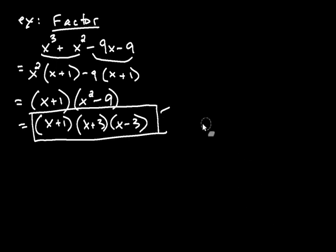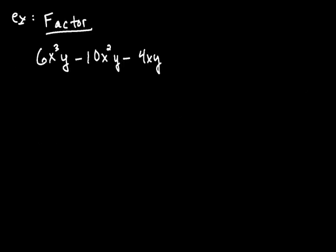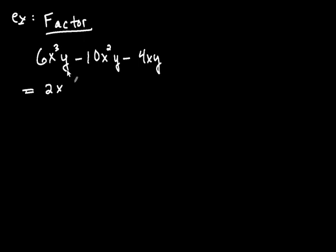Let's try another one — factoring another polynomial. This one has three terms: one, two, three. So this is a trinomial. When you see trinomials, factoring by grouping is usually not the strategy you want. I start by asking: do the three terms have anything in common? Six, ten, and four have a factor of two in common. The terms also have an x in common and a y in common. So I factor out two x y — this is called the greatest common factor.